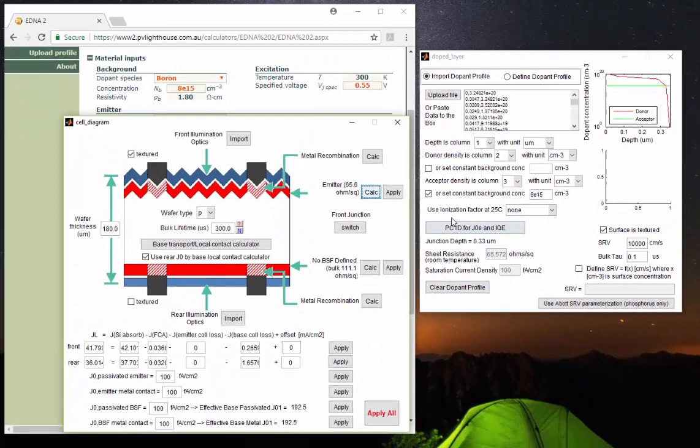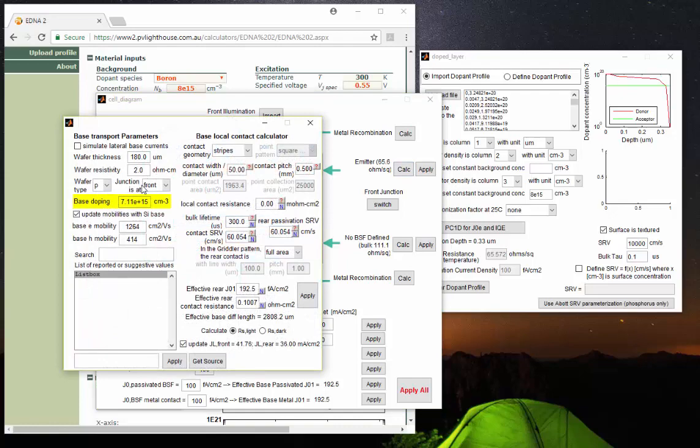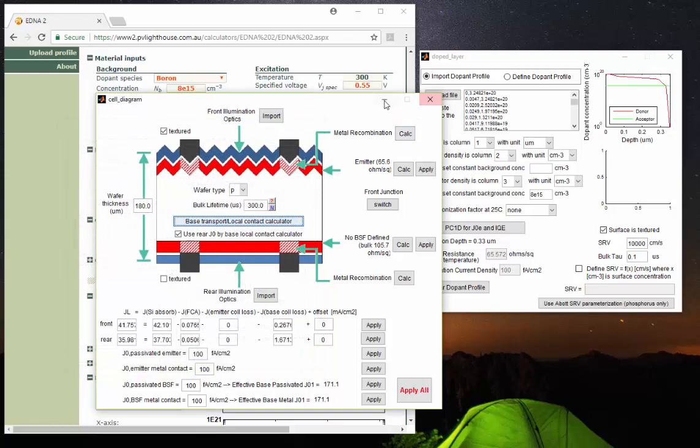Also it is important to go back to the cell diagram and go to the base and make sure that in the base, we also have p-type doping with the same base doping. So we update that.